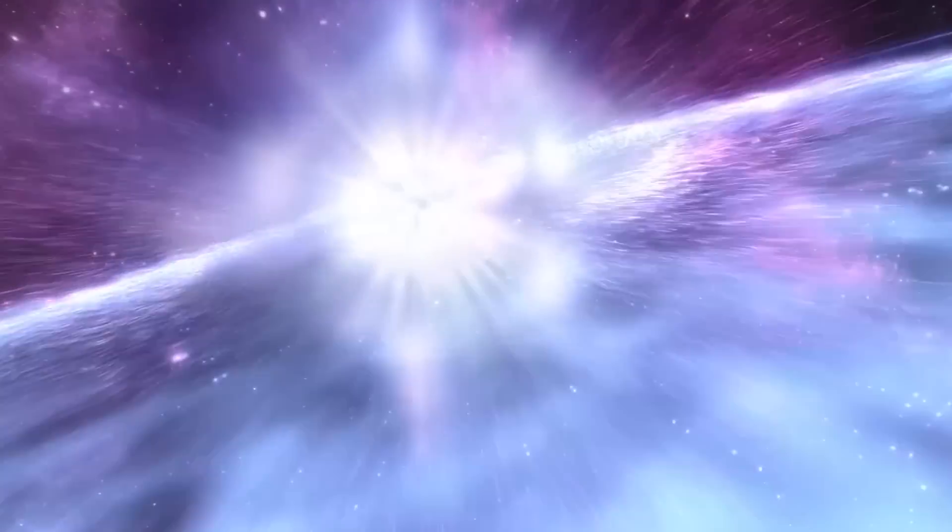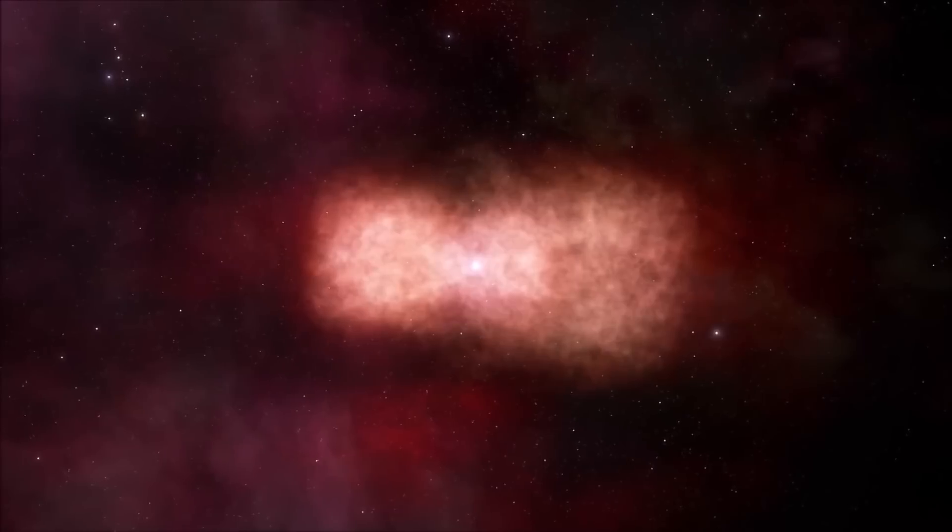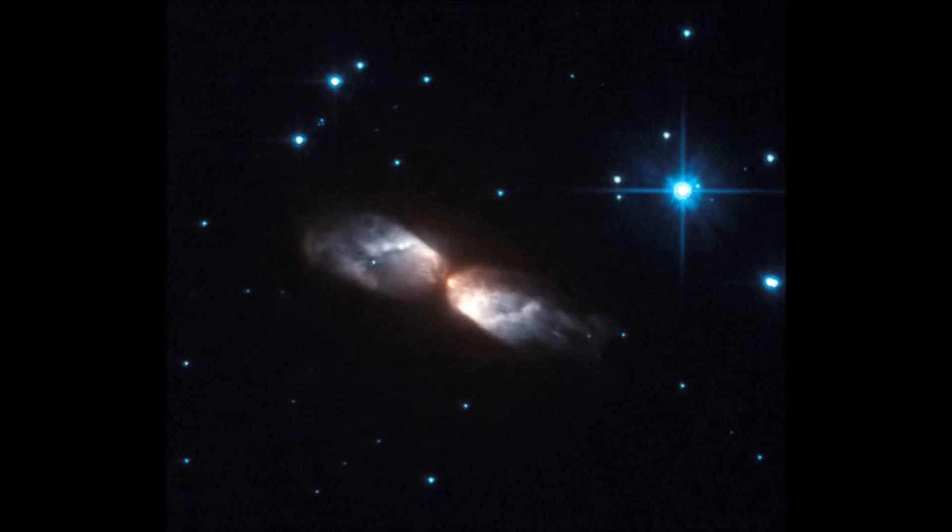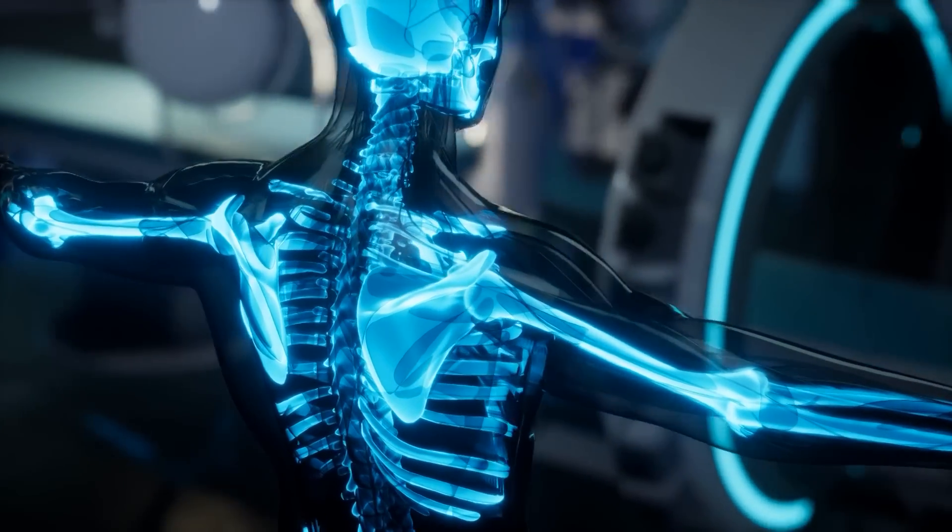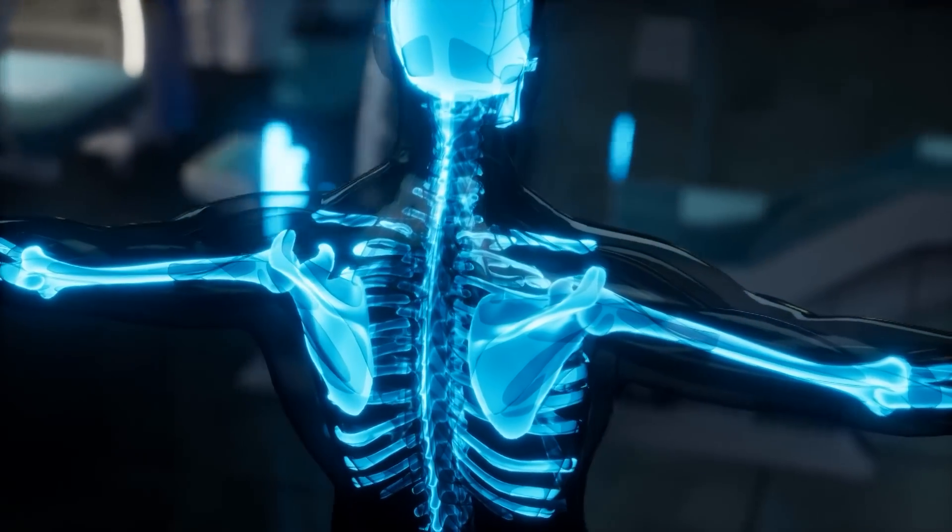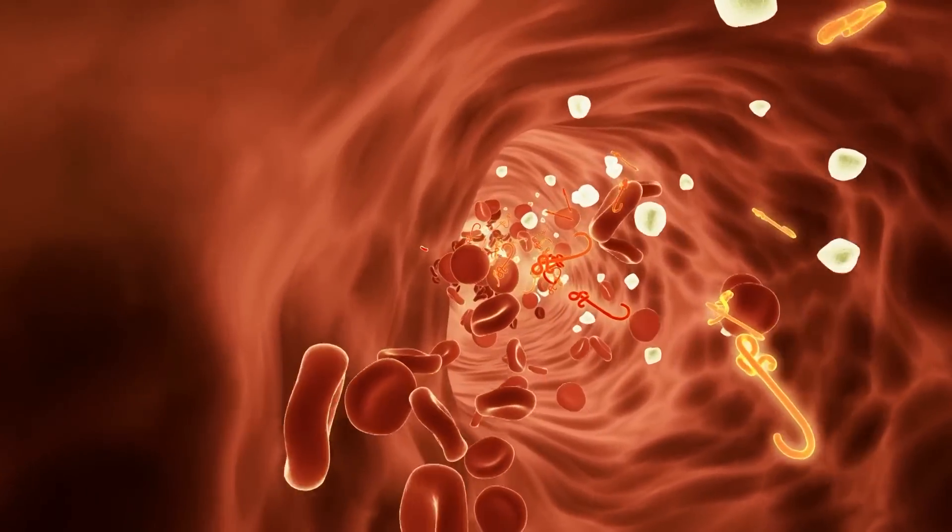Around 4.6 billion years ago, such a process helped forge the sun and the planets of our own solar system and paved the way for living things, supplying elements like the calcium in our bones and the iron in our blood.